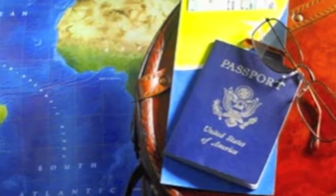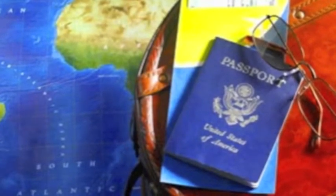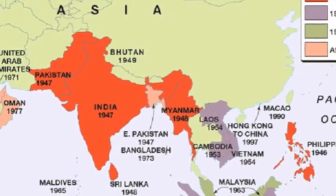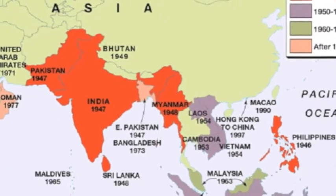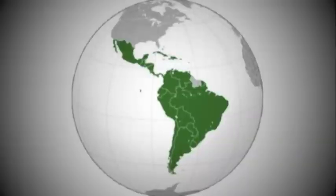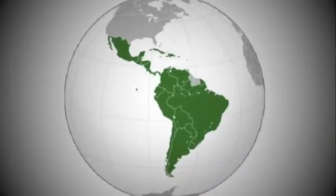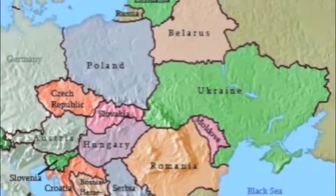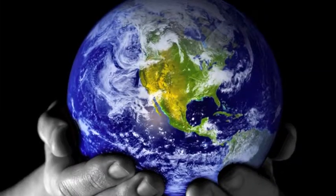Travelers to developing countries are more likely to get typhoid fever because they are exposed to contaminated foods. Typhoid Fever is most common in Asia, Africa, Latin America, and Eastern Europe. 21 million victims are affected worldwide.